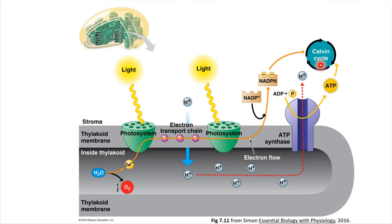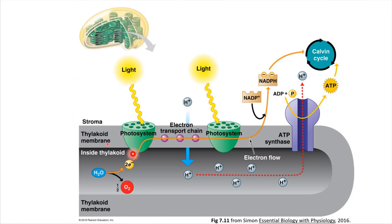Everything that's happened on this slide — ignoring the Calvin cycle for a moment — these are called the light reactions, because they depend on light in order to happen. If light wasn't present, then that electron would not get energized and none of this would happen. Next up, we're going to head into the Calvin cycle, which doesn't require any light in order to take place, so sometimes it's called the dark reactions.